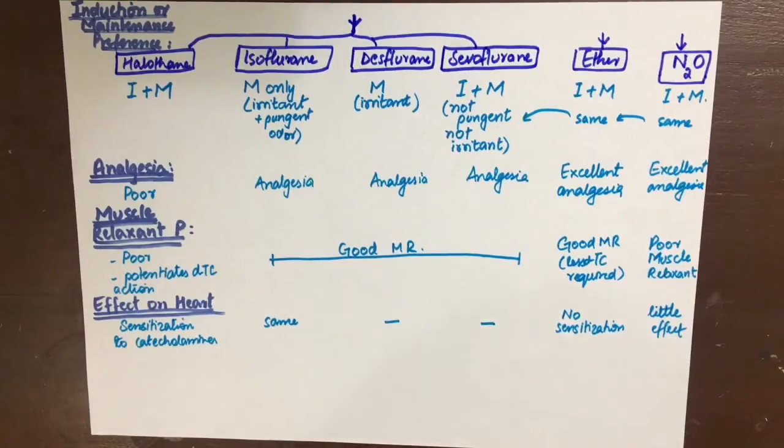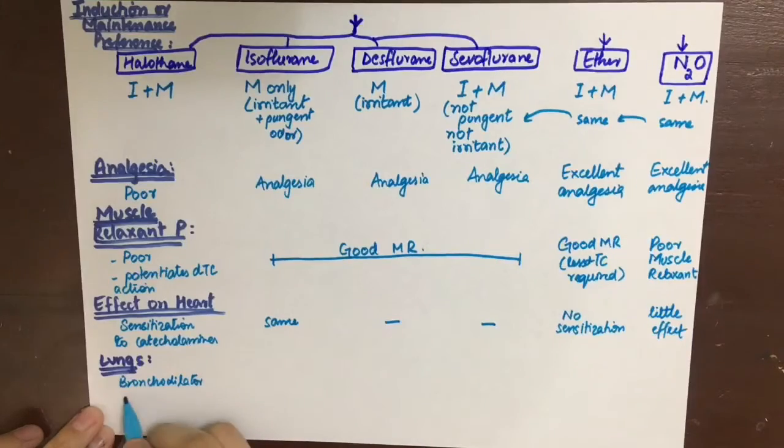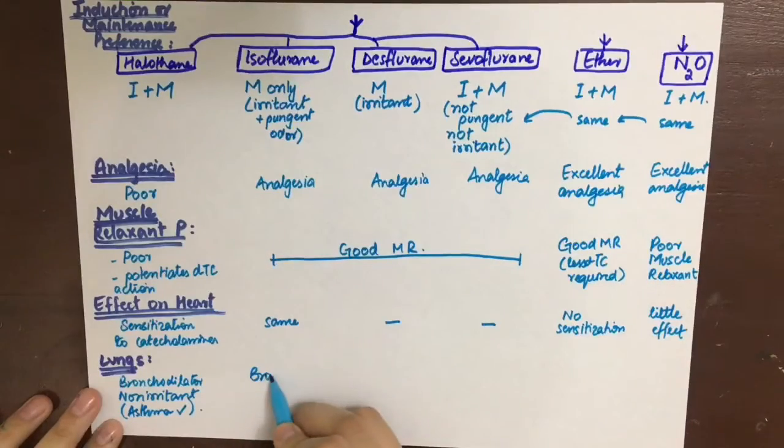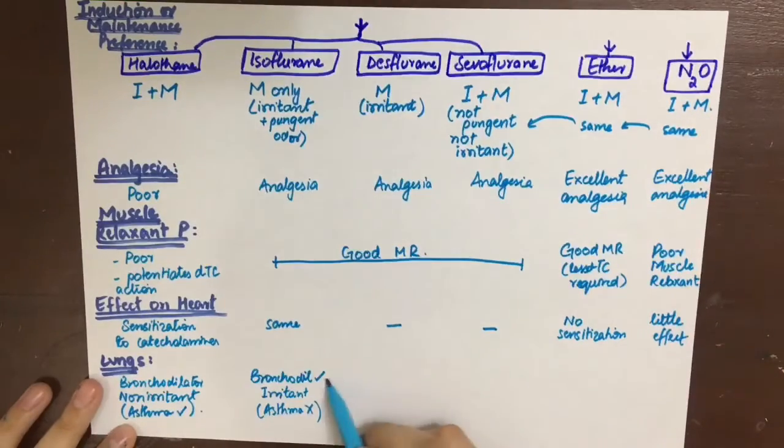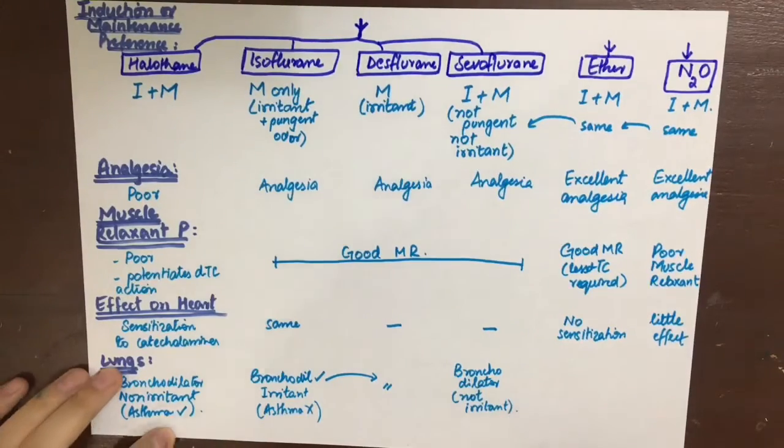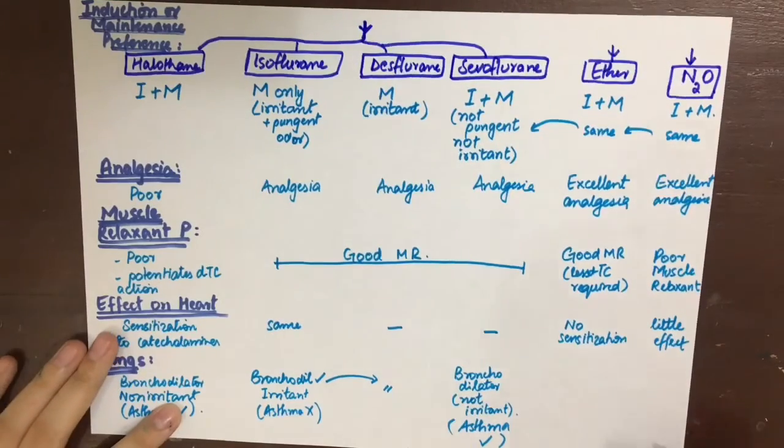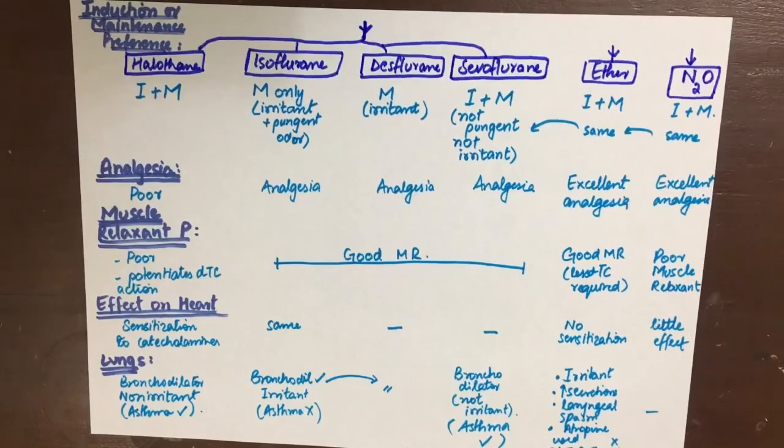Now let's see the effects of these anesthetics on the lungs and airways. Halothane is a bronchodilator which is good and it is not even irritating. So it can be used in asthmatic patients. Isoflurane is a bronchodilator but it is an irritant as we mentioned. So we should not give them in asthma. Same goes for desflurane and sevoflurane is not an irritant. So it also has bronchodilating properties, so this is also safe for asthmatics. While ether, it is an irritant. It increases the secretions of bronchioles. It also causes laryngeal spasm. And atropine should be used to overcome this. So definitely not use in asthmatic patients.